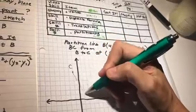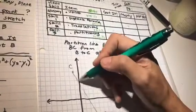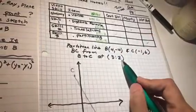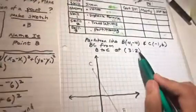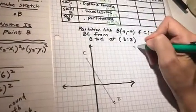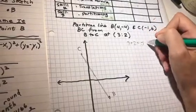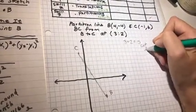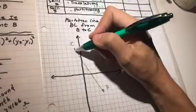Then get a straight edge. And line that up. And again, I need to partition the line 3 to 2. So what that means is, step 1, add them together. So that means I have to cut my line in 5 equal pieces.